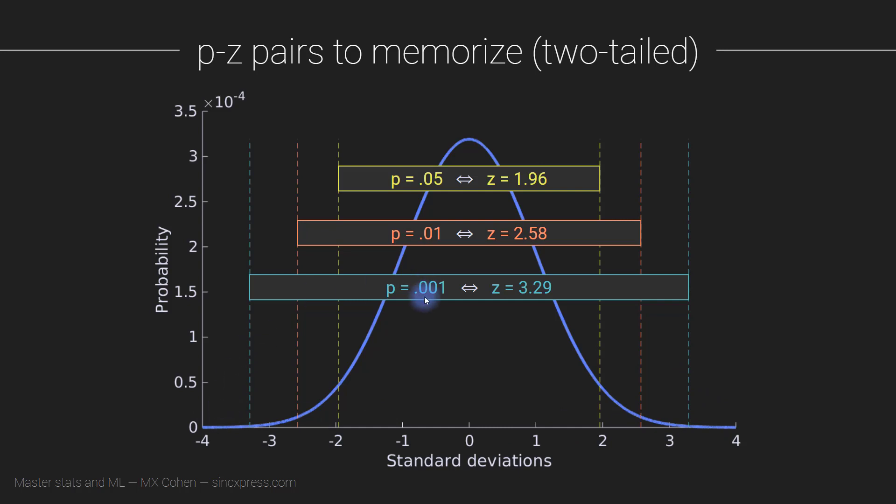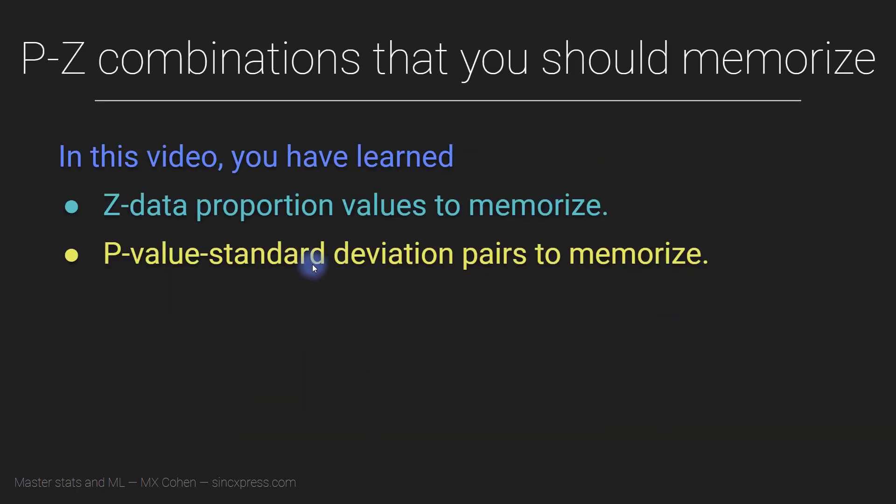And again, this is plus or minus, so it's either 3.3 standard deviations over here or 3.3 standard deviations off to the left, depending on the direction of the effect. So there you go, some z-value and proportion data that are worth committing to memory, and some p-value and z-value pairs that are also worth committing to memory.